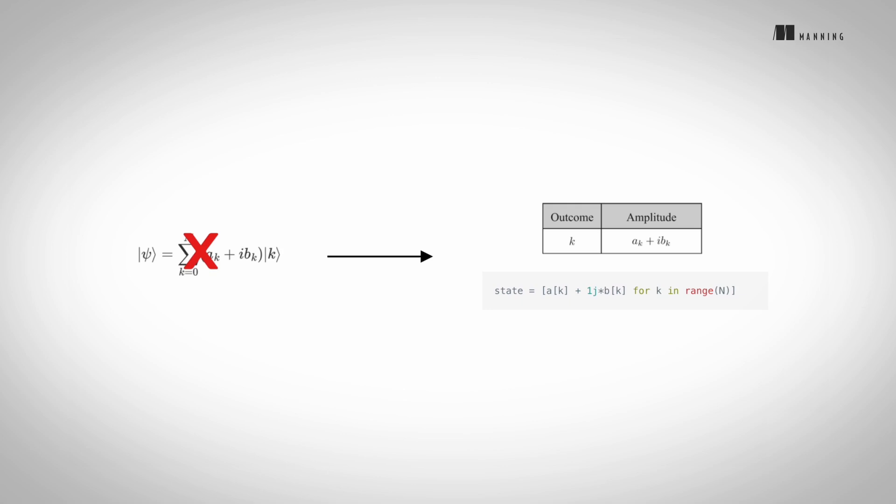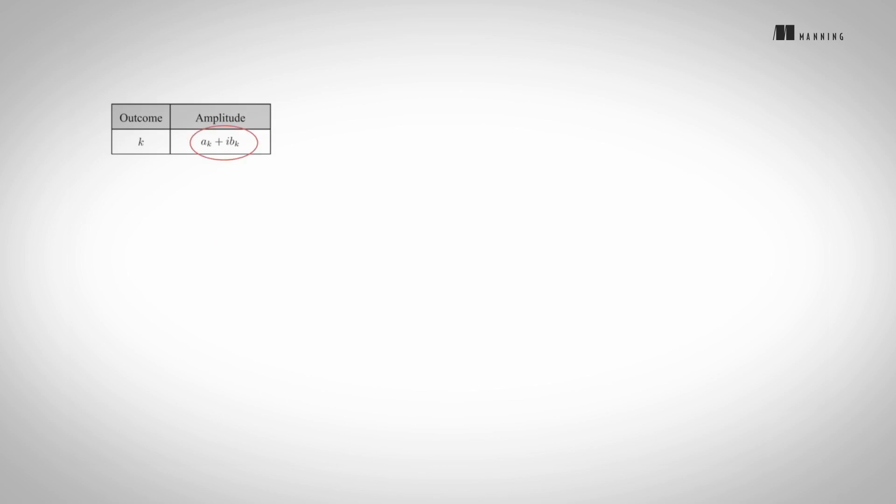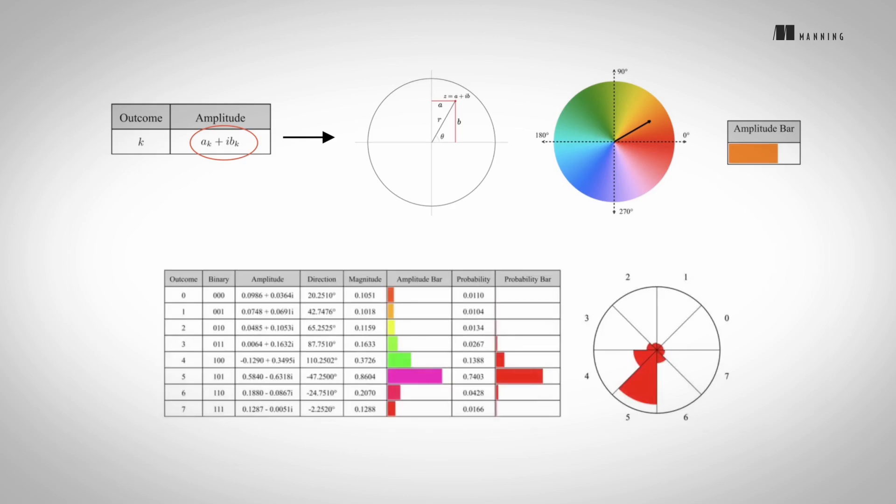When we introduce quantum states, we represent them with tables and code instead of complex mathematical notation. We use colors to visualize complex numbers to make information about a state easier to comprehend.